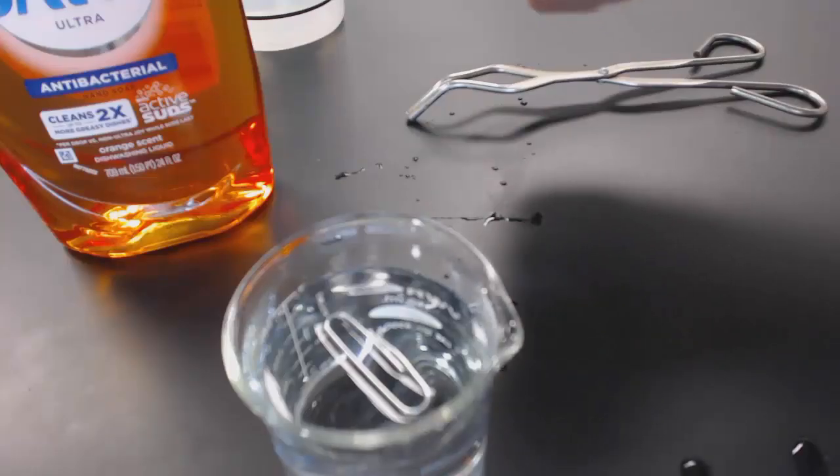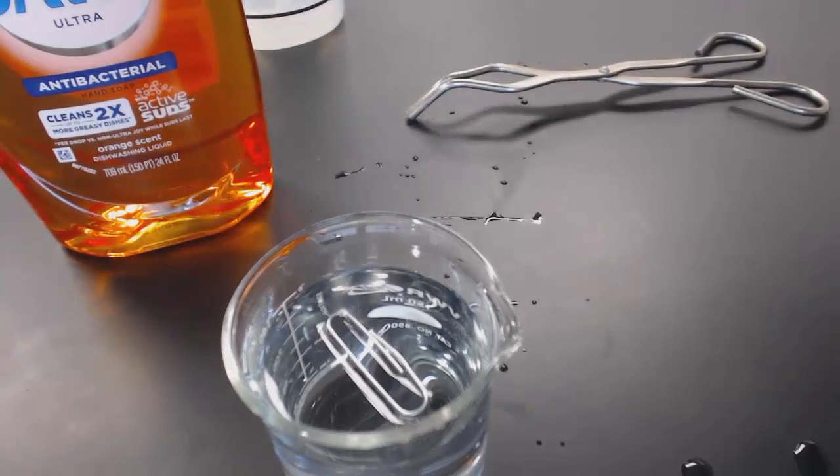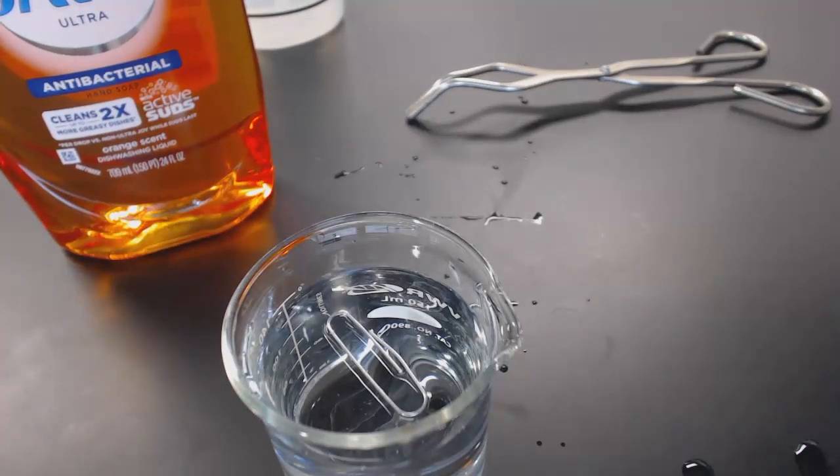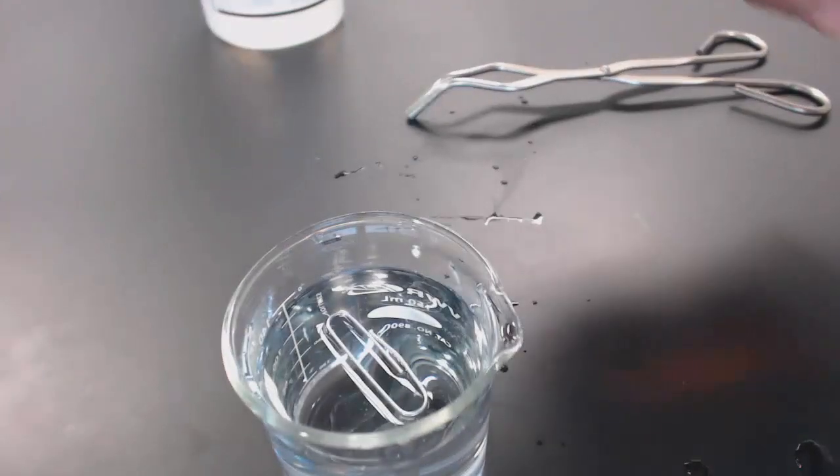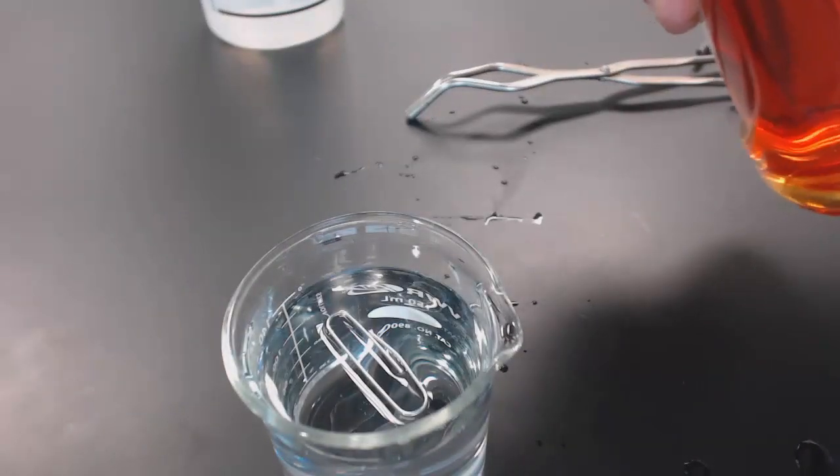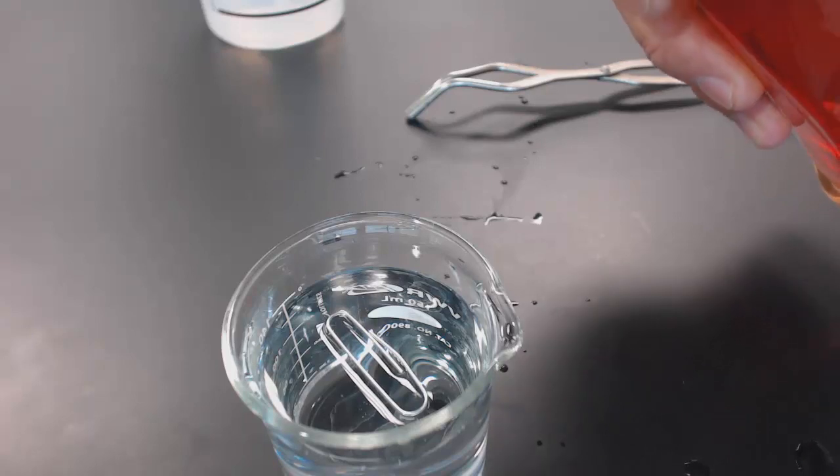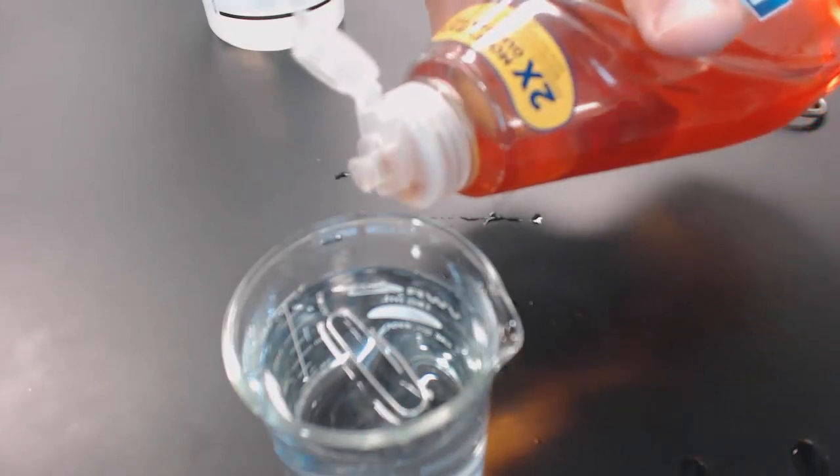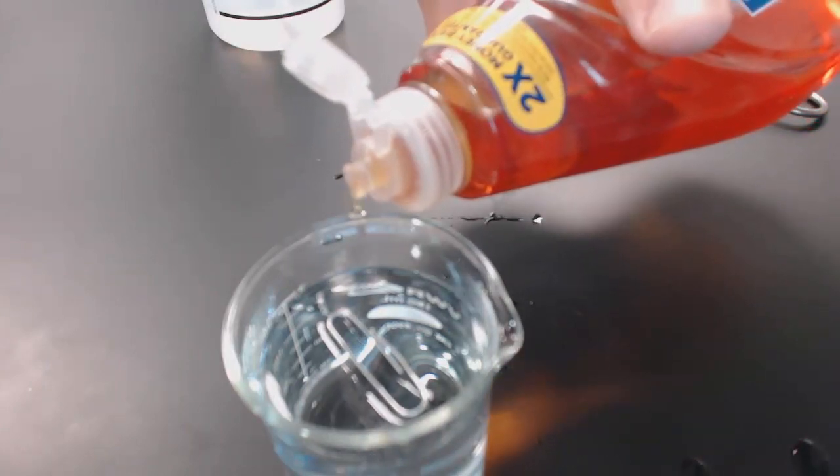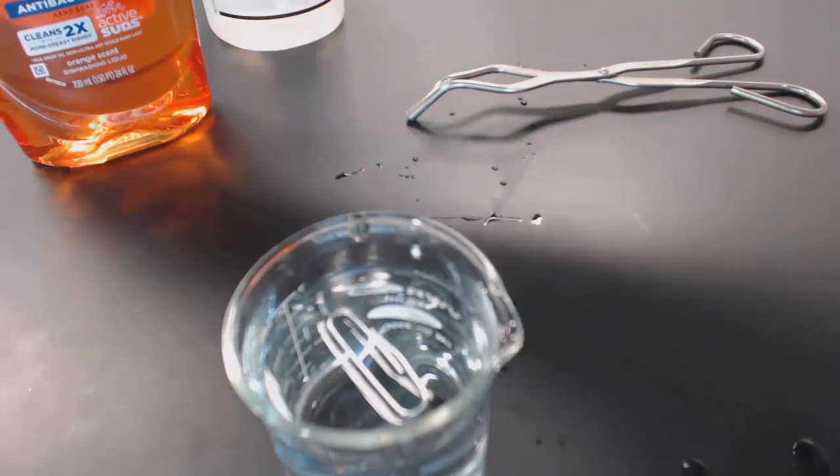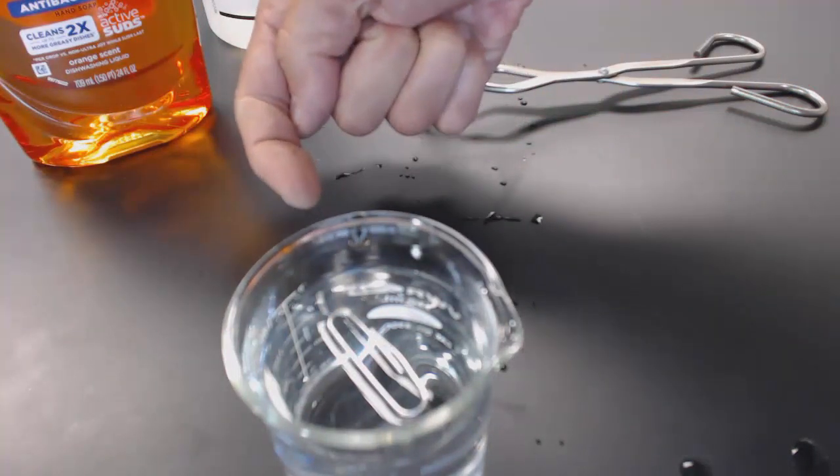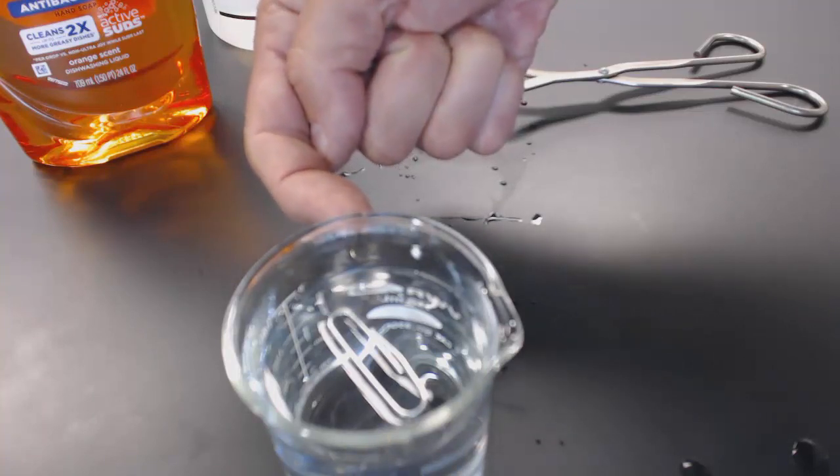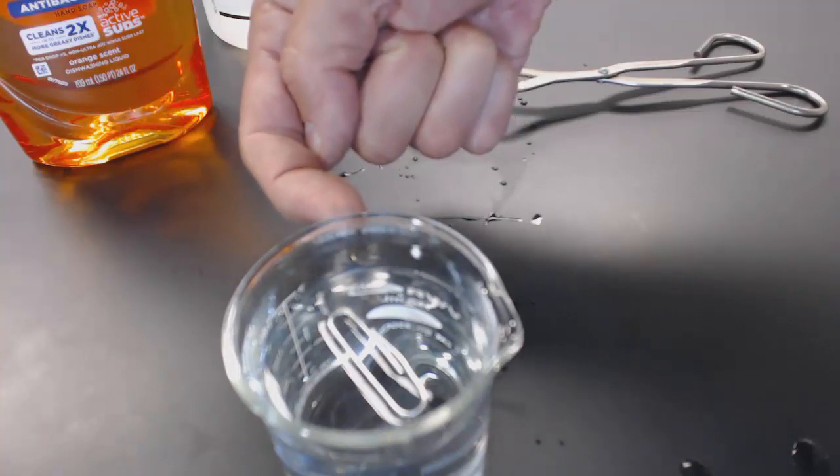If you take Dawn dish soap which has strong attraction for water but not as strong as water has for itself, then you can break the surface tension. There will actually be molecules of Dawn interspersed between the water and this happens fairly quickly. I'm going to just put a little bit on the edge and you'll see it work its way down there.